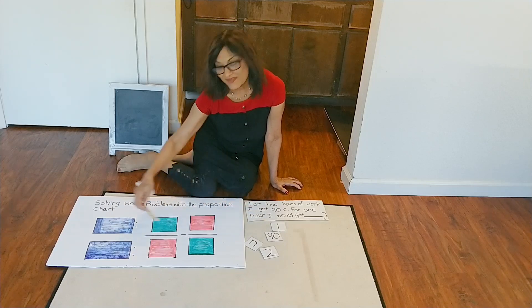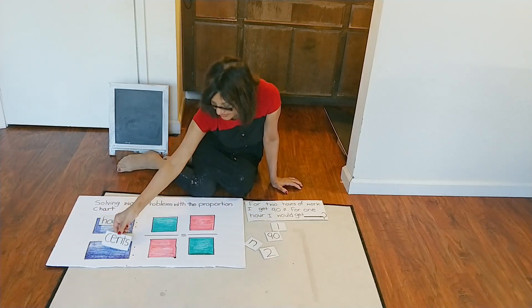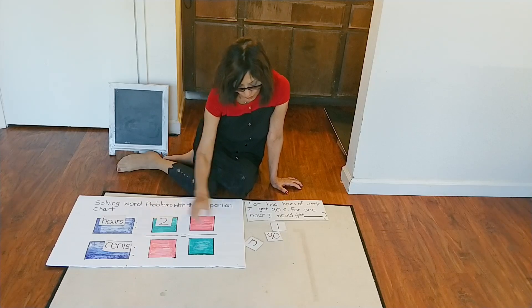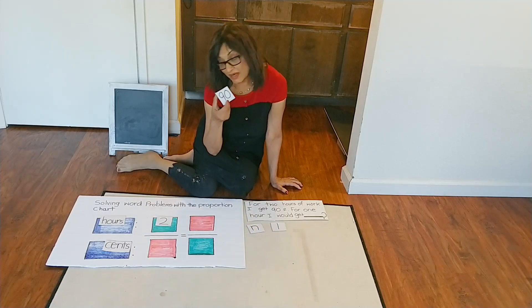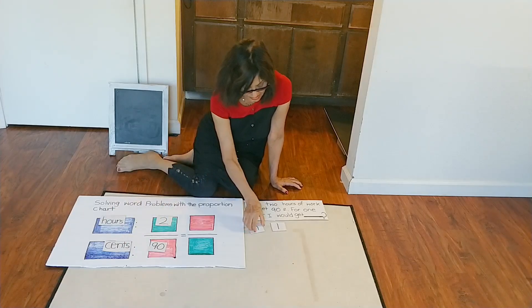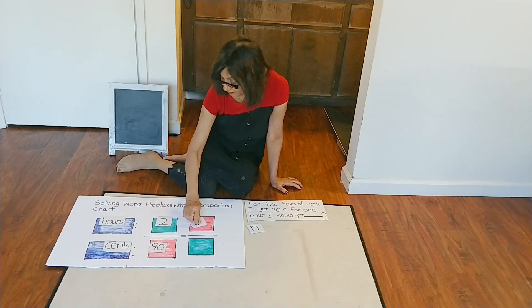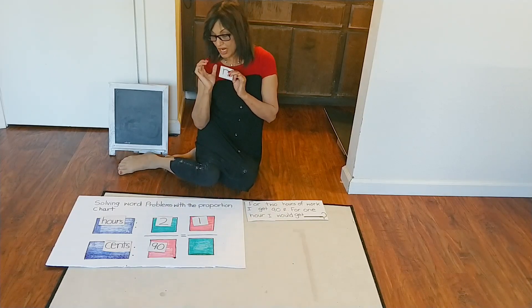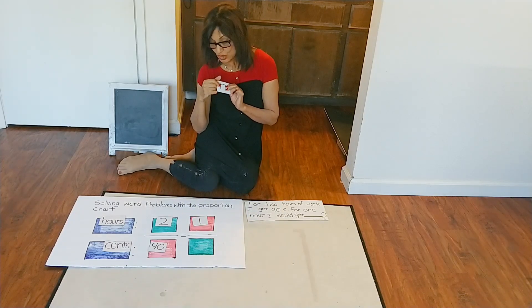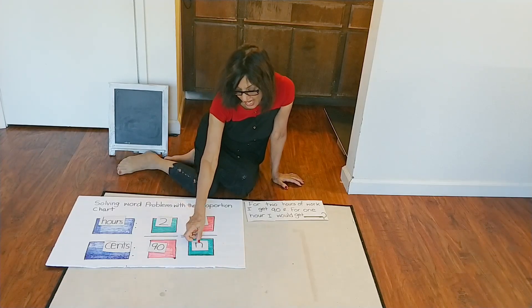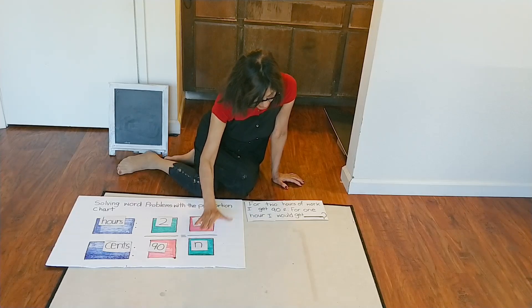Let's put hours here first and cents here. I have two hours of work, and how much did I get? 90 cents. And for one hour, N stands for unknown number — we don't know how much I will get. So that N stands for the unknown number.